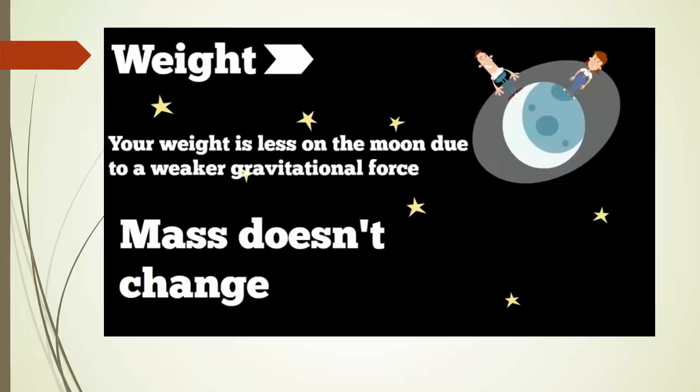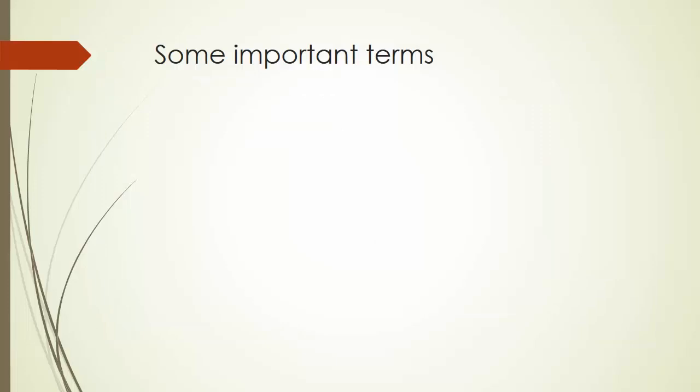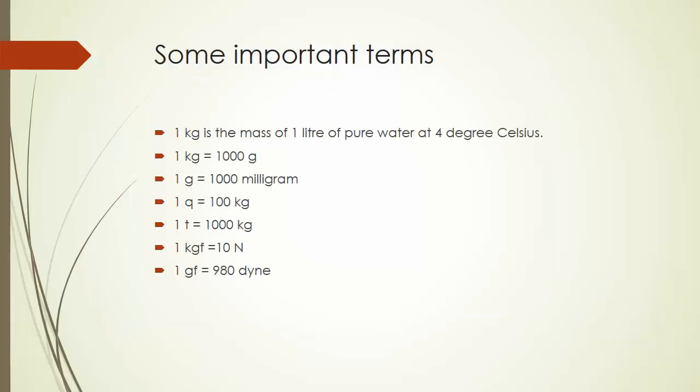Now let's see some important terms related to mass as well as weight. First, one kilogram is the mass of one liter of pure water at four degrees Celsius. Next, one kg is equal to thousand grams, then one gram is equal to thousand milligrams. Grams and milligrams are basically used for smaller quantities in medicines and other small stuffs.